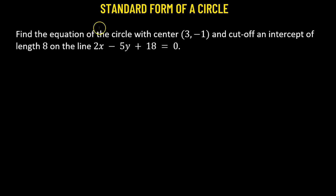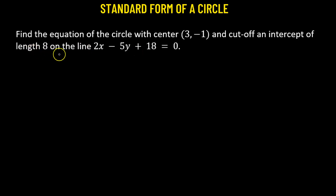In this problem, we need to determine the equation of a circle whose center has the coordinate (3, -1), and it cuts off an intercept of length 8 on the line 2x minus 5y plus 18 equals 0.